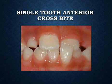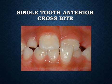Single tooth anterior crossbite occurs when the lower incisor occludes labially to the upper incisor, or the upper incisor occludes lingually to the lower incisors. This is called a single tooth anterior crossbite.